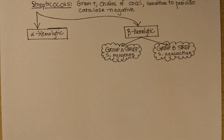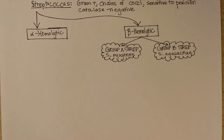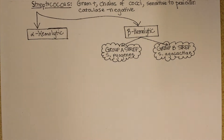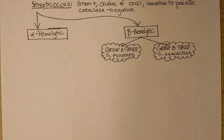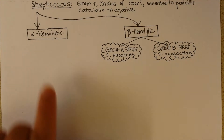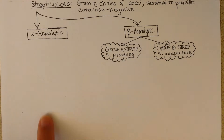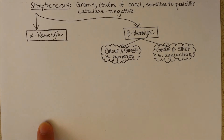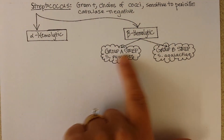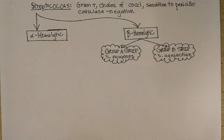This is Streptococcus part two. I actually already recorded this one and then deleted it by accident from my phone, so that's why you don't see anything else on the page, but this is actually part two. In part one we talked about the alpha hemolytic most famous streps, and now we're going to talk about the most famous beta hemolytic streps.